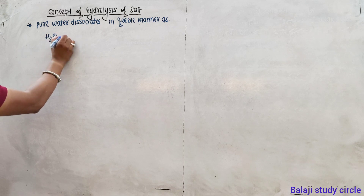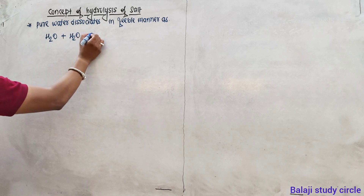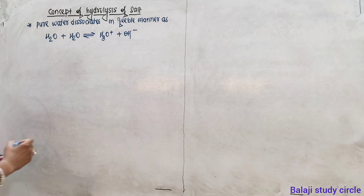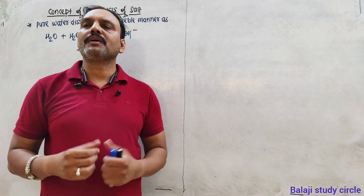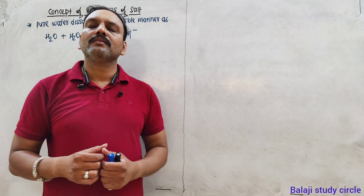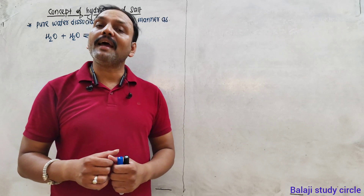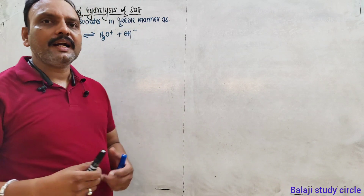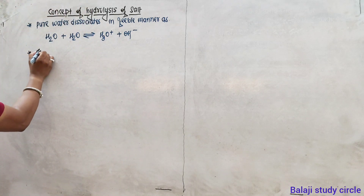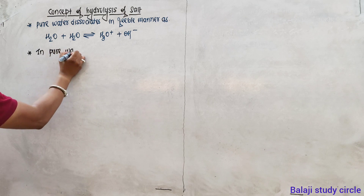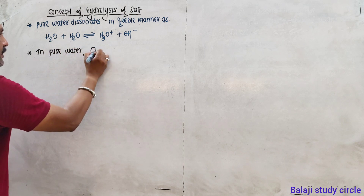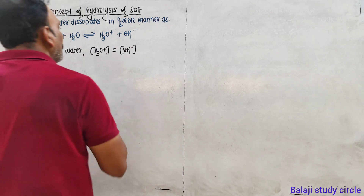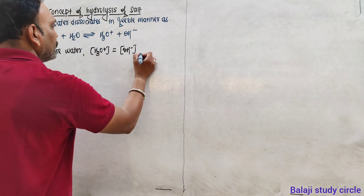The dissociation of water can be shown in this manner. If water is pure — no contamination, no salt added — then hydronium ion (H+) and OH- ion concentrations are equal. In pure water, the concentration of H3O+ (hydrated H+) and the concentration of OH- ion are equal.